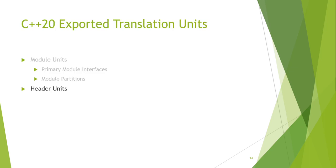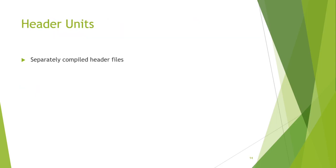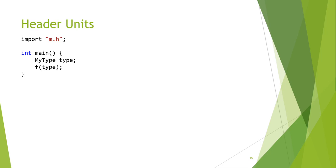The last form of C++20 exported translation unit is header units. Header units are really just separately compiled header files, and they act more like a formalized PCH. Header units export everything in their translation unit and also have the added ability to export macros. The syntax is very analogous to #include, where the argument is a header name — you can use the quoted form or the angle bracket form you'd see with standard library headers. Any macros defined in that header are also usable in the importing translation unit.